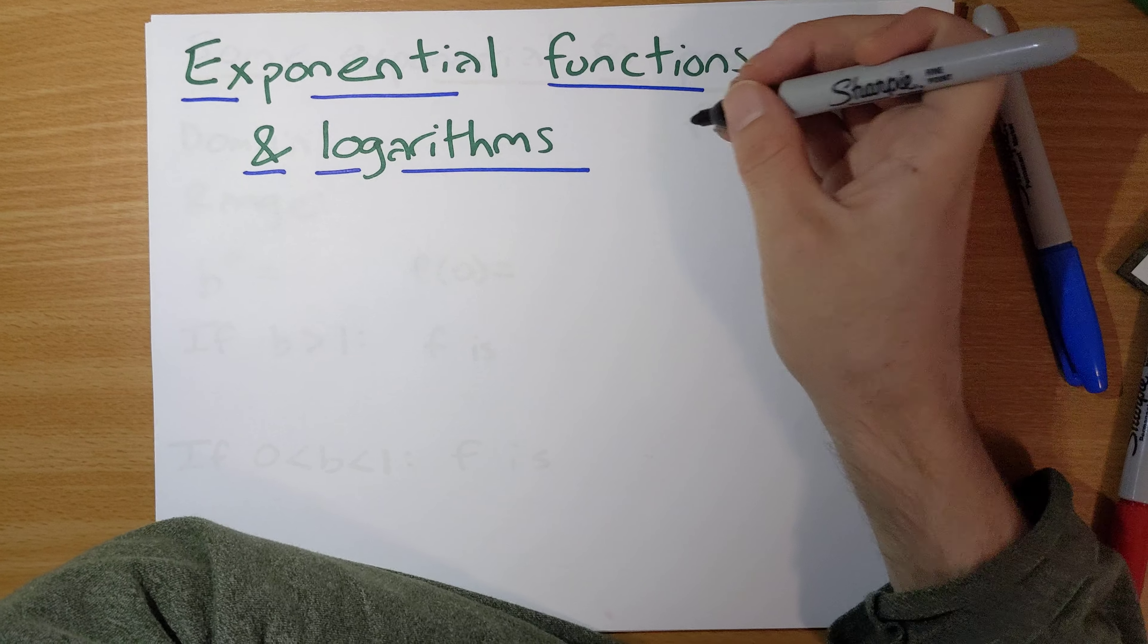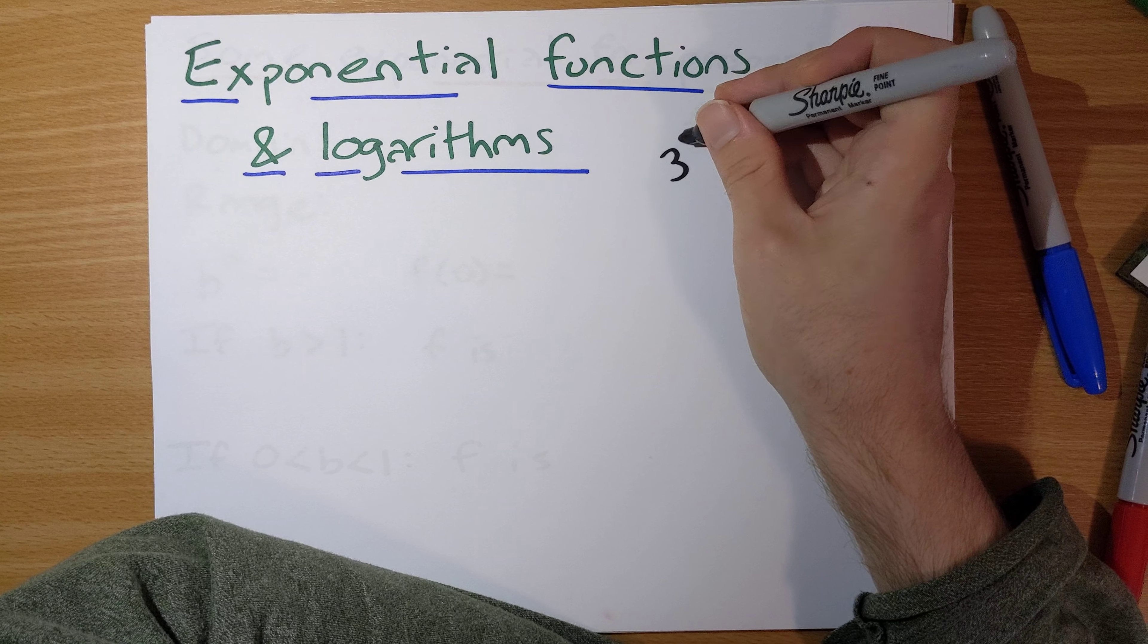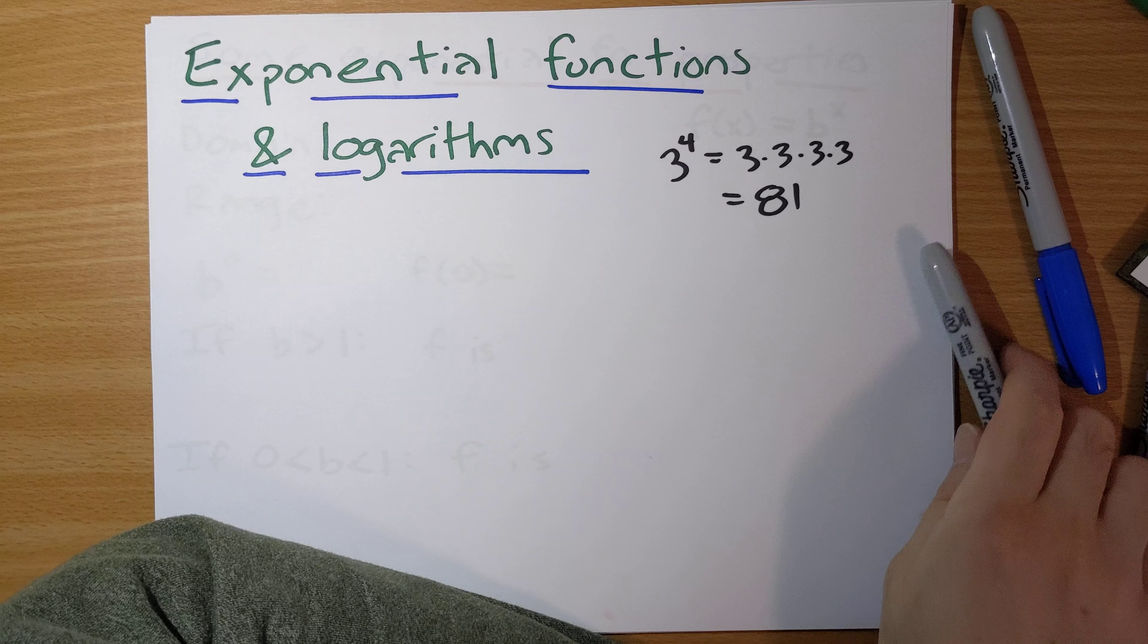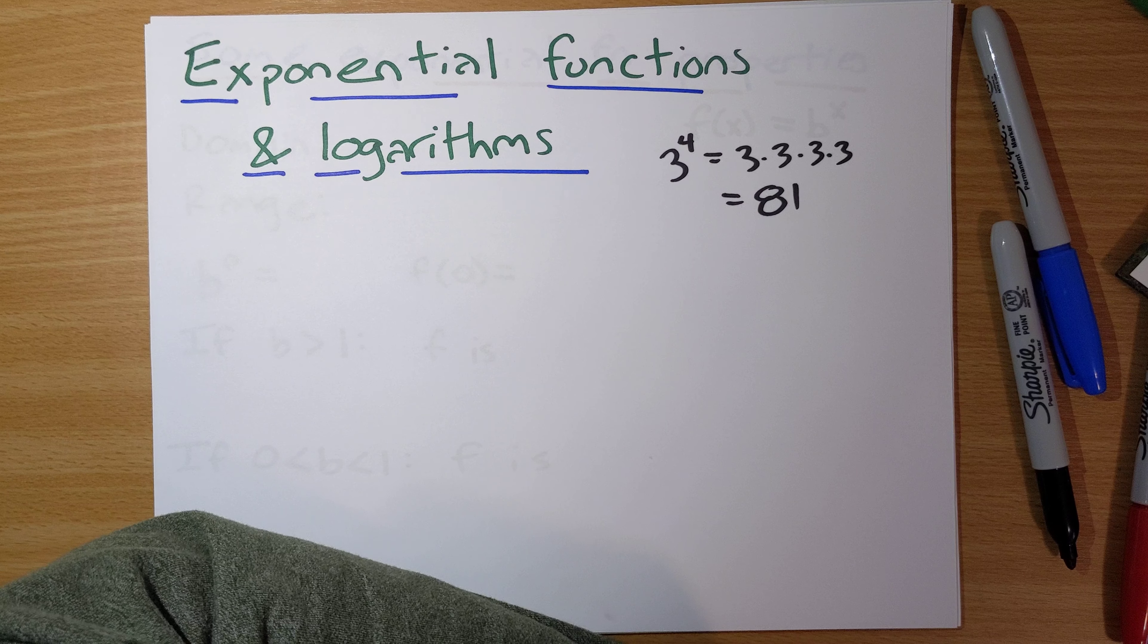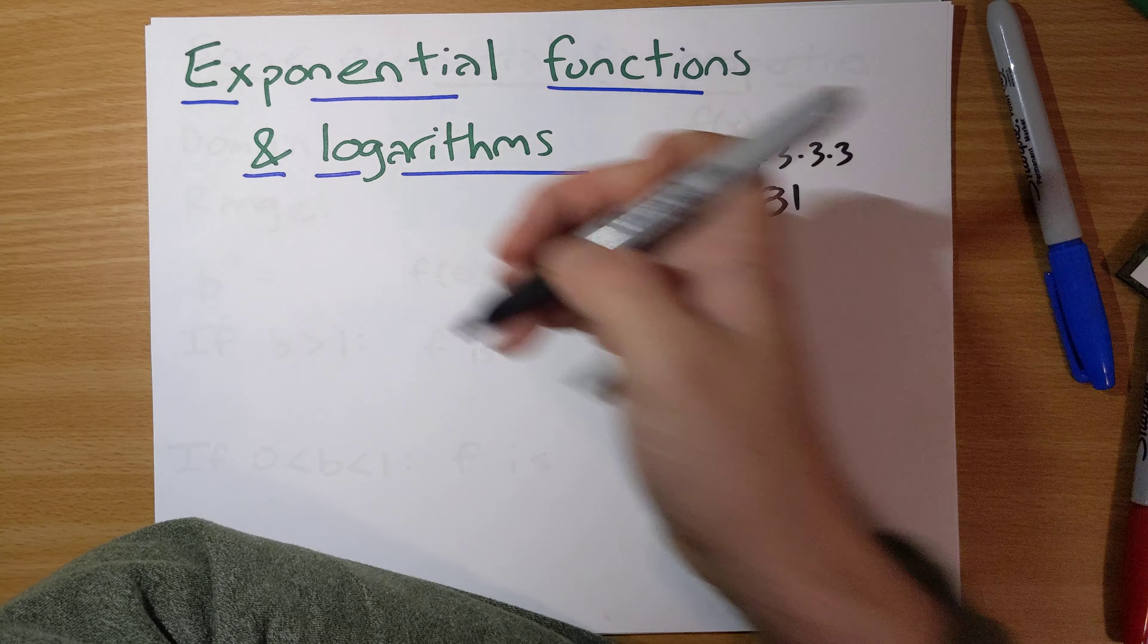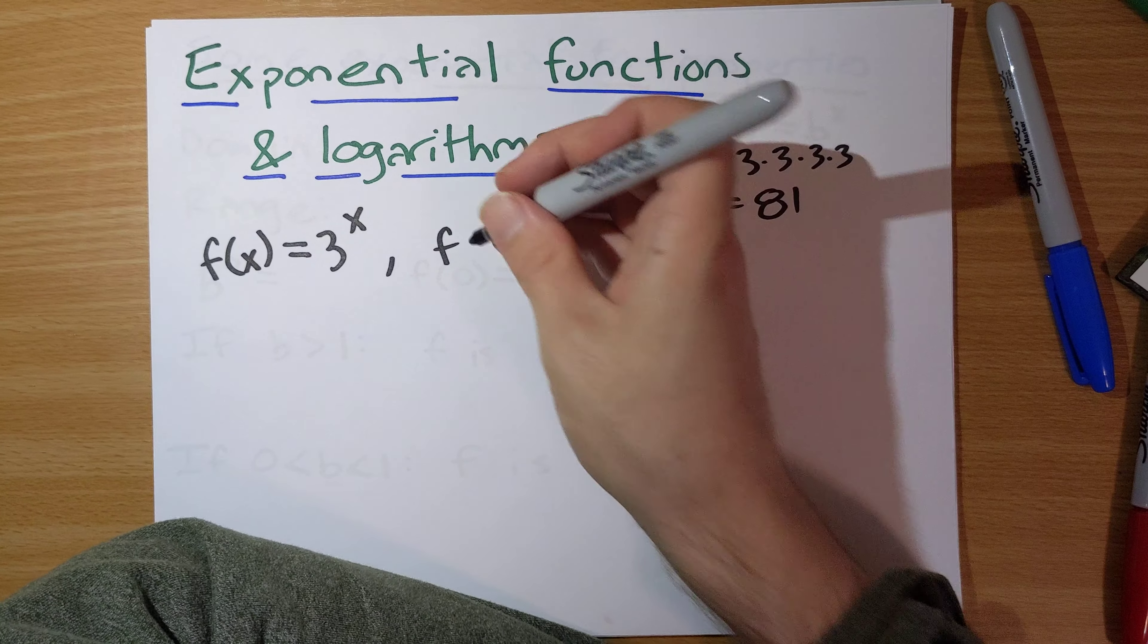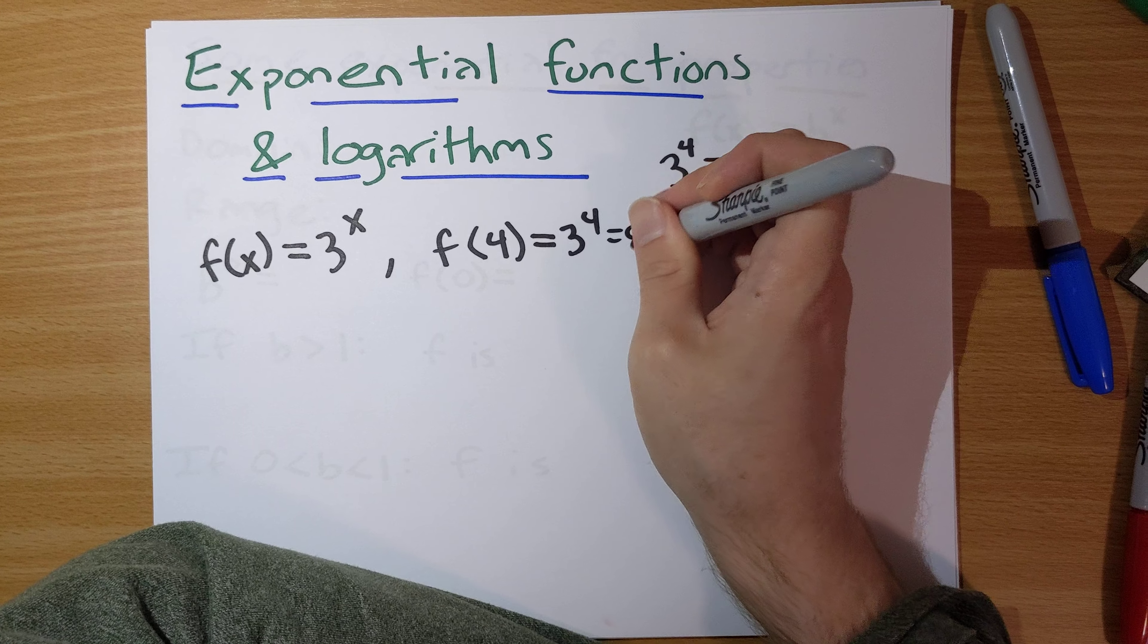So what are exponential functions? Well, we know how to do exponents. For example, 3 to the 4th is 3 times 3 times 3 times 3, which is 81. The thing with exponential functions is that we're going to turn this into a function by replacing the exponent here, 4, with a variable. An example of an exponential function: f of x would be 3 to the x. So by this calculation, f of 4 is equal to 3 to the 4th is 81.